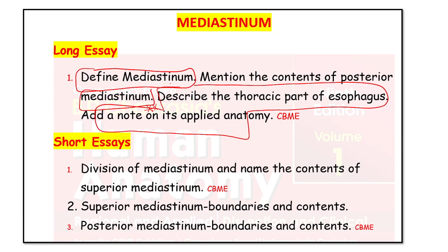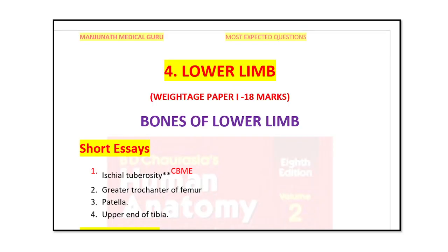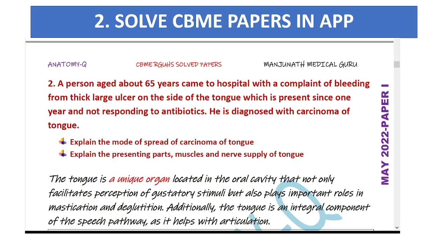Another example: describe the thoracic part of the esophagus and add a note on its anatomy. These are all important topics. For the lower limb as well, you must know the important topics in each chapter and prepare answers for them. The app provides chapter-wise important topics for you to go through. That is tip number one.